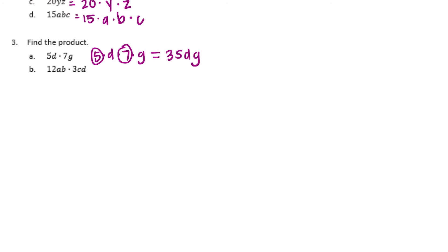And then the last one: 12ab times 3cd. That would be 12 times a times b times 3 times c times d. I can do 12 times 3, that is 36. And the rest are variables, so I'm just going to do 36abcd.